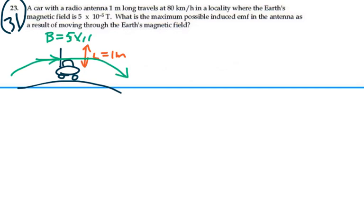The magnitude of that magnetic field is 5 times 10 to the minus 5 Tesla. So the induced EMF, the maximum induced EMF, is going to be the perpendicular magnetic field, which in this case would be all of it, times the length times the velocity.